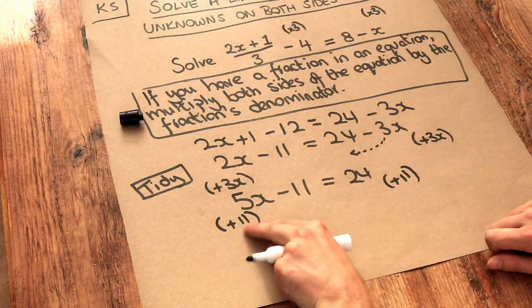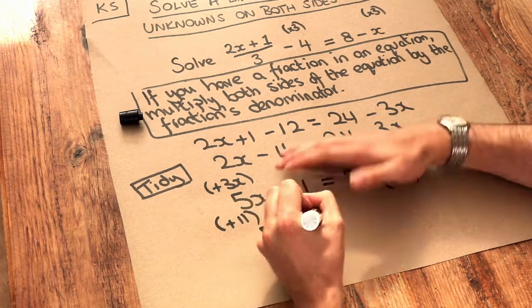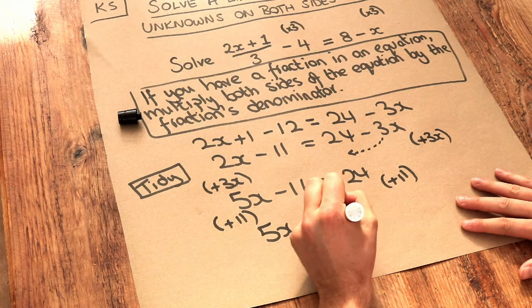On the left hand side, the plus 11 just gets rid of the minus 11, leaving 5x. And 24 plus 11 on the right hand side is 35.